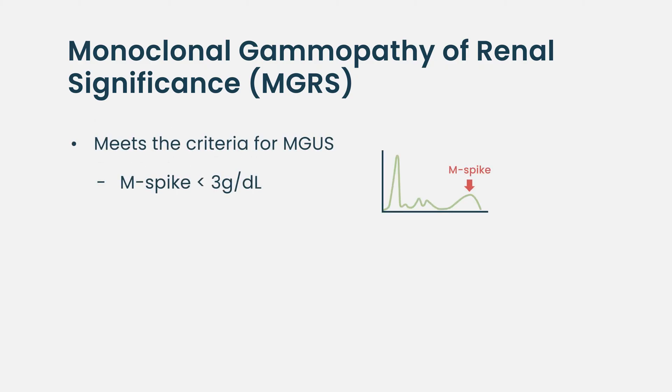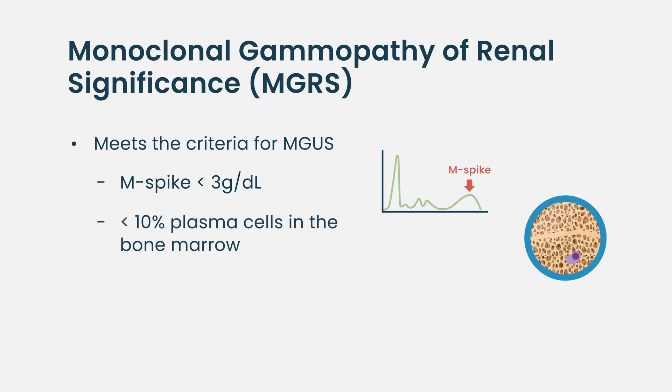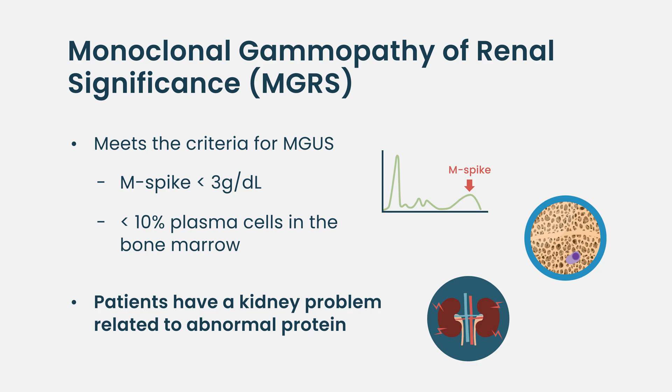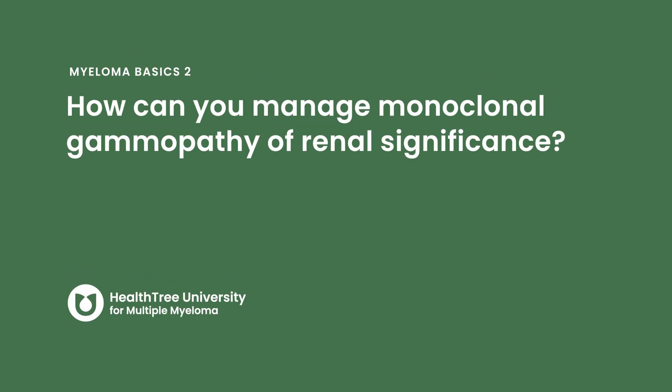Monoclonal gammopathy of renal significance is a relatively new term used in patients who have MGUS — monoclonal gammopathy of undetermined significance. We start with an M spike or myeloma protein of less than three grams per deciliter and less than 10 percent plasma cells in the bone marrow. What we see in patients with renal significance is that they do have a kidney problem related to this abnormal protein.